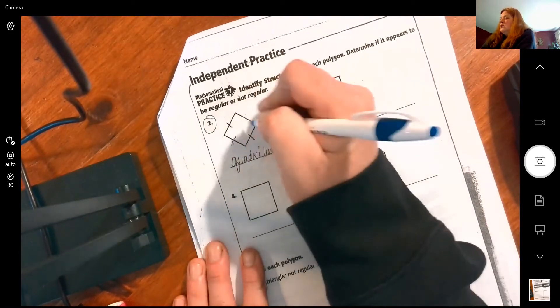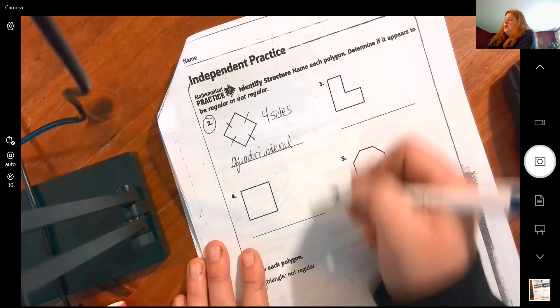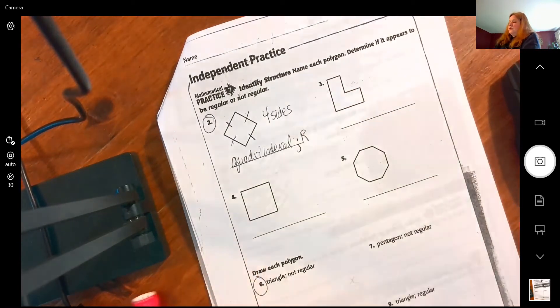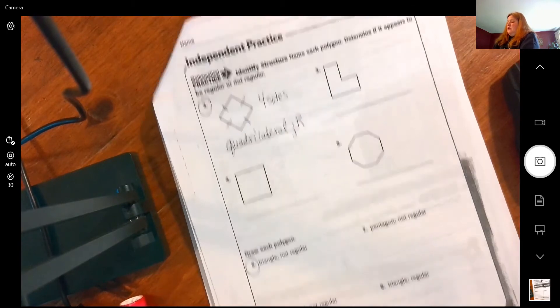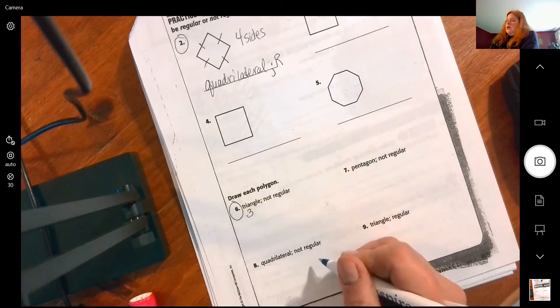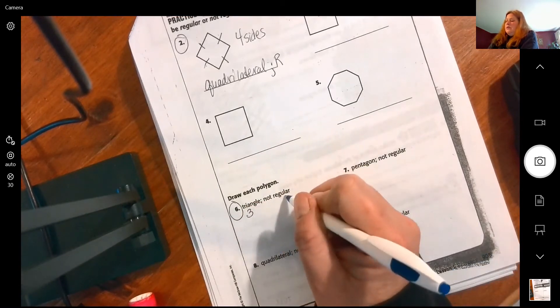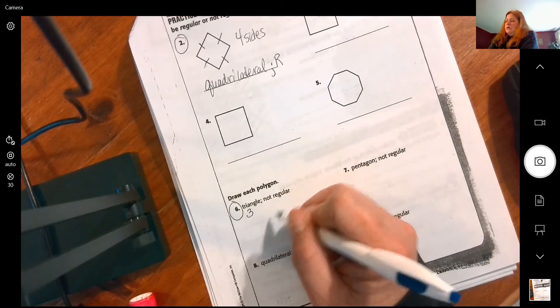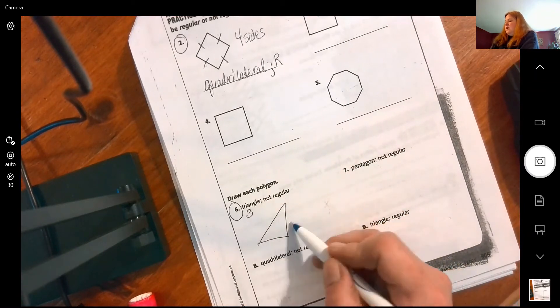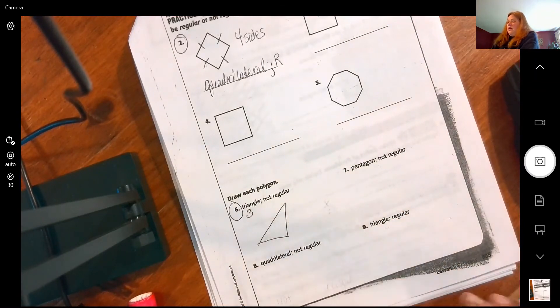And the sides appear to be equal, so it is regular. You can just abbreviate it. Draw a triangle, so how many sides do we need? Three. And we need them to not be the same or not congruent. So one, two, three. These are pretty close but definitely they're not all equal.